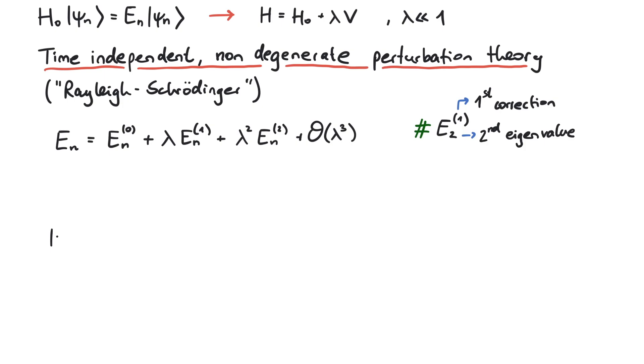But not only the energies, also the eigenfunctions will be changed due to the new potential term. So we make a similar ansatz for the eigenfunctions as a power series in lambda. It is conventional to claim that these corrections are orthogonal to the original eigenfunction.